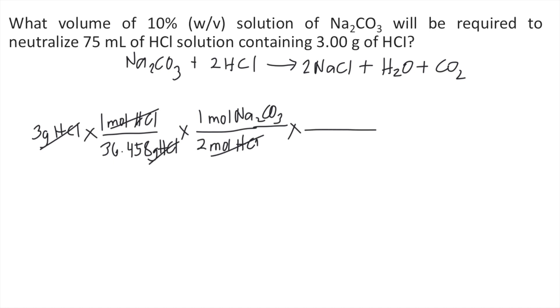So there are 2 Na's, so 2 times the molar mass of Na is 22.99 plus carbon is 12.01 plus 3 oxygen. So that's 3 times 16. So 1 mol of Na2CO3 is equivalent to 105.99 grams of Na2CO3.